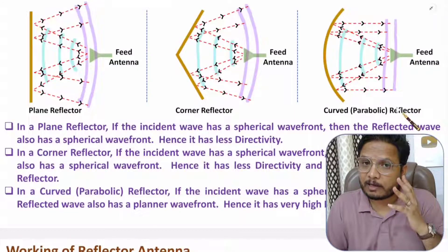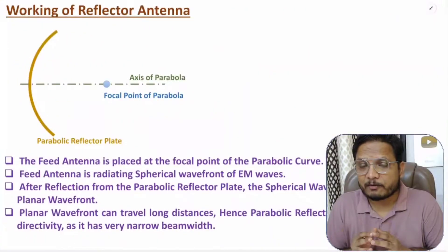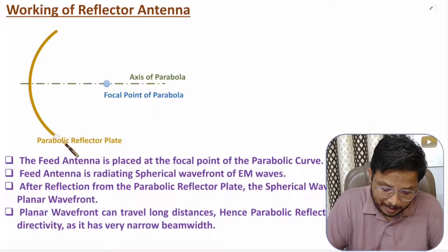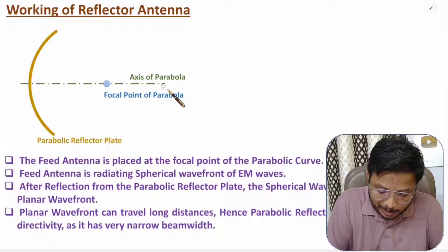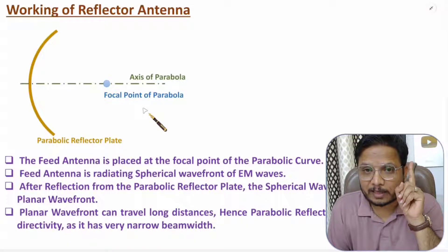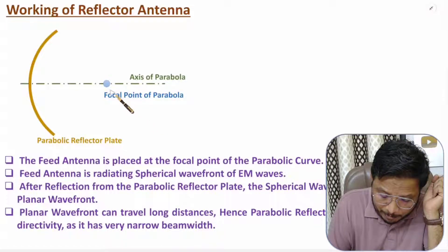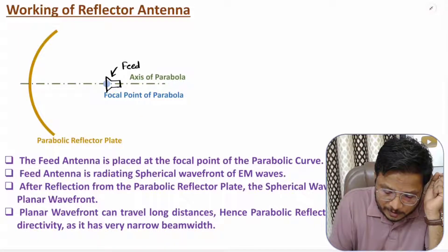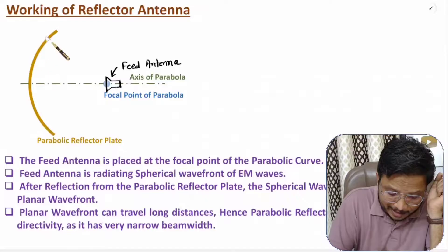Now I'll explain the working of the reflector antenna. In the majority of applications we use the parabolic reflector antenna. The shape is a parabola, and on the axis of the parabola there is a focal point. The active element — usually a horn antenna as the feed — is placed at this focal point, and the parasitic element is the reflector plate.